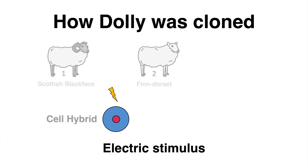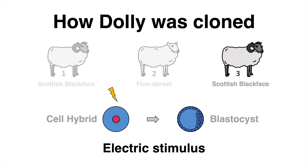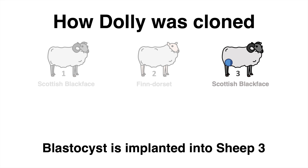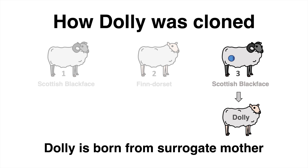An electric stimulus was used to trigger the cells to divide, developing into the blastocyst stage. Sheep 3, again a Scottish Blackface, was used as a surrogate mother. The blastocyst was implanted into Sheep 3, and some months later Dolly was born.